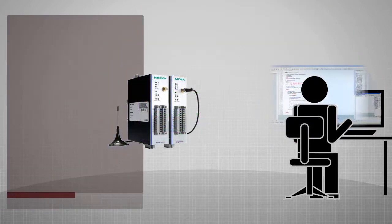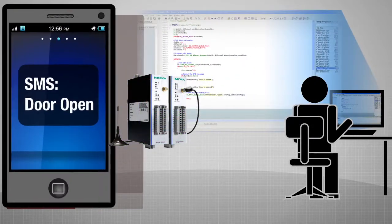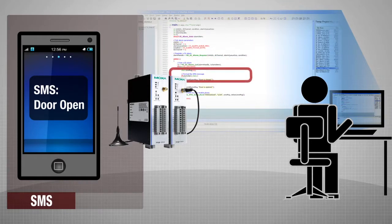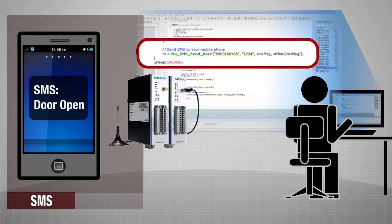But what happens if you are on the move and not by your computer? No worries. Our cellular programmable platform has a SMS API to inform you on your cell phone whenever an alarm has been triggered. The first two APIs are the same as the alarm API — all you have to do is add: send an SMS message whenever the door opens. Easy, right?